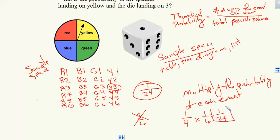And as you can see, we get the same answer. So those are two ways of finding the probability of compound events, creating a sample space and multiplying the probability of each event. And there you go. Probability of compound events. Thanks for watching.